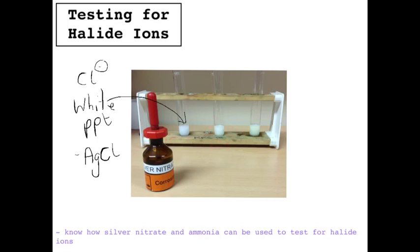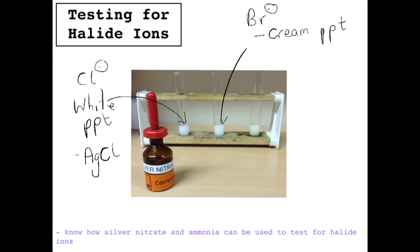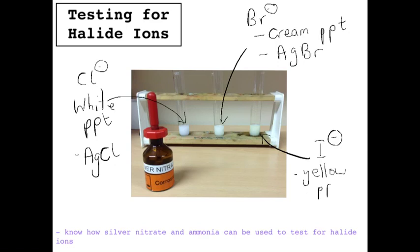The middle one had bromide ions in, and you can see that makes a slightly discoloured precipitate compared to the white — we call that a cream precipitate. That made a cream precipitate of silver bromide. This one here is more yellow, and that is the iodide ions, making a yellow precipitate of silver iodide.